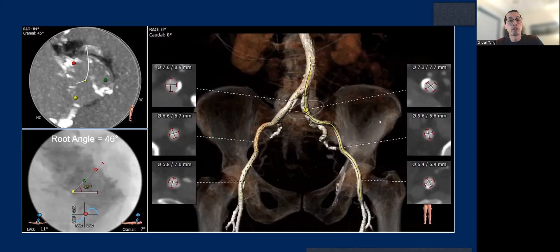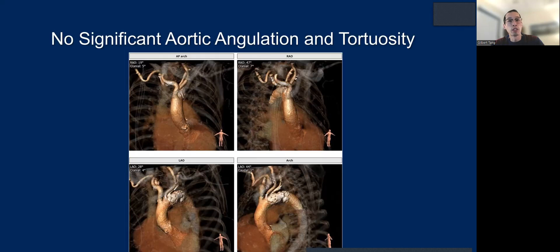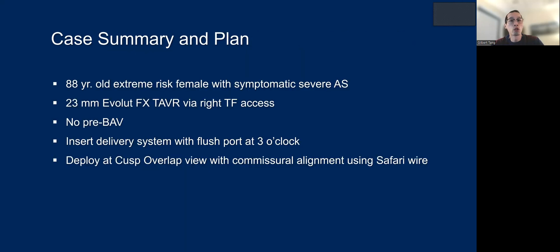The case is pretty straightforward — tricuspid calcific AS, aortic root angle reasonable at 46 degrees, no significant aortic arch angulation or tortuosity. So we're going to do a 23 Evolut FX via right transfemoral approach. We didn't think it would need pre-BAV given not severe calcification, and we insert the delivery system at 3 o'clock as we customarily do for commissural alignment, deploying in a cusp-overlap view.